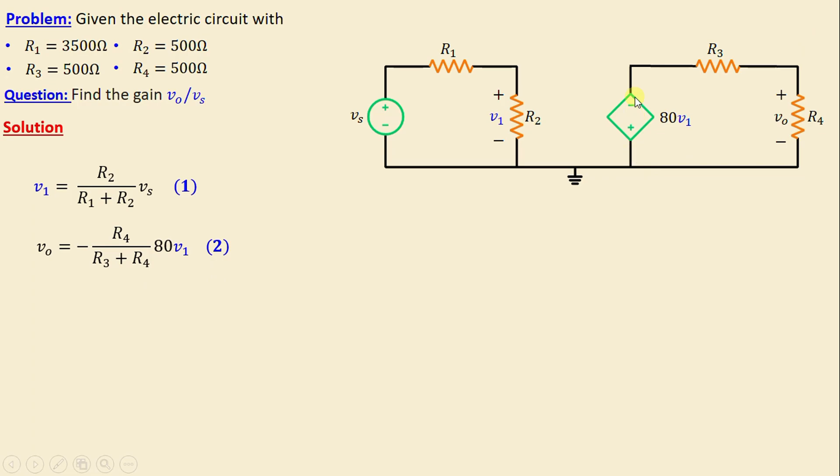By applying the voltage divider in the other loop, we can write vo = -R4/(R4 + R3) × 80v1. I will call this equation 2.